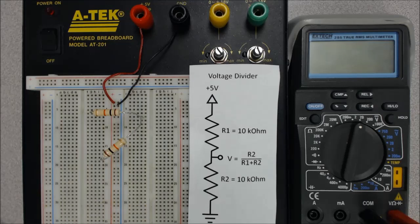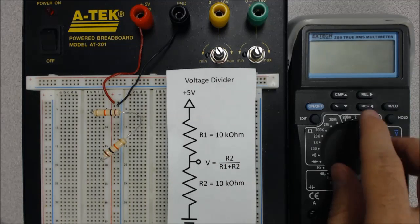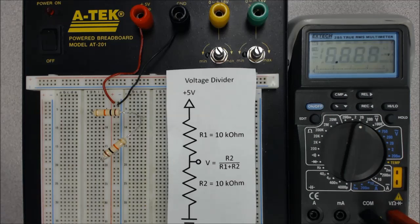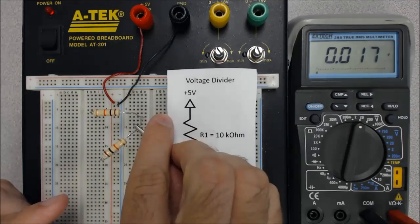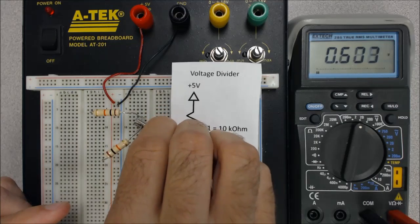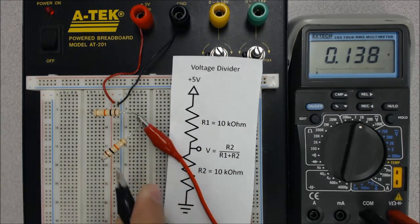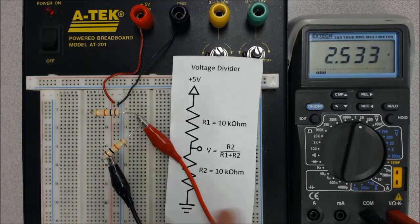Now, one thing we can do is we can measure the voltage at this center node here, like I was talking about earlier. So I'm going to turn on my multimeter, and I'll turn on the breadboard. So if I want to measure the voltage at this center node relative to ground, I need to put my red multimeter connection on that center node, and I need to put the black multimeter connection on ground. And there you see we get 2.5 volts,